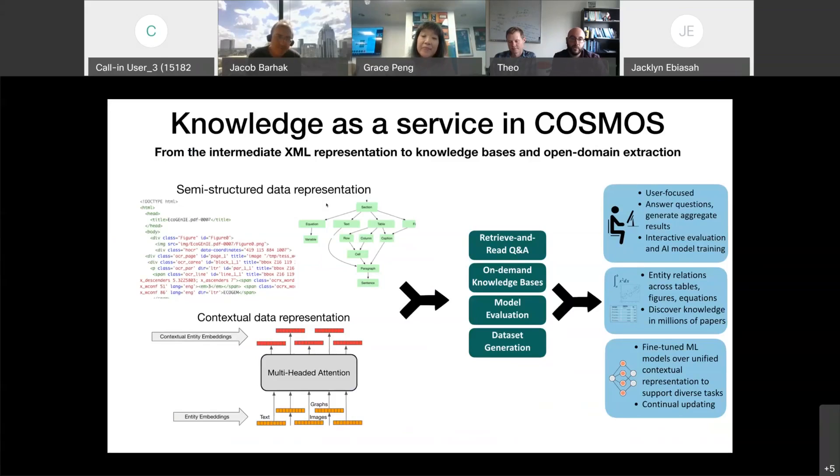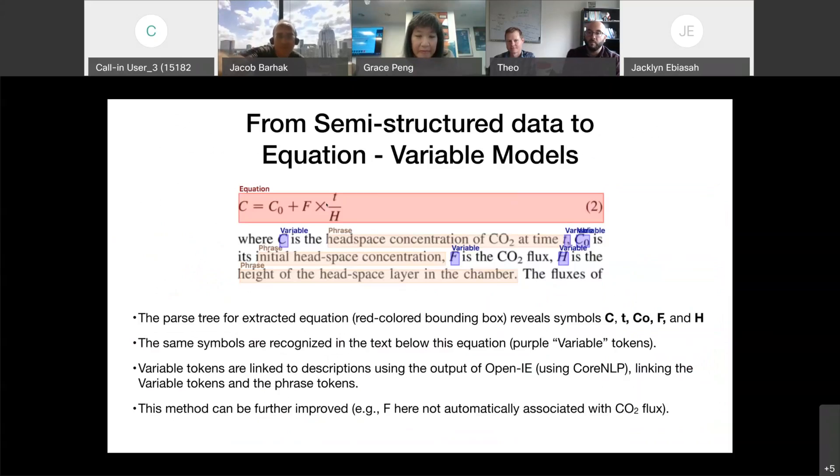And using these two types of representations, Cosmos offers you microservices such as question and answering functionalities, on-demand knowledge-based construction, dataset generation and so on. As you will see later in the demo, the domain scientists do not have to programmatically deploy any of these services. In fact, you can directly interact with the system using natural language or using click and retrieve interfaces.